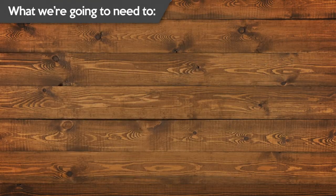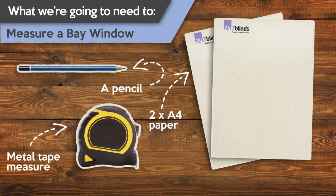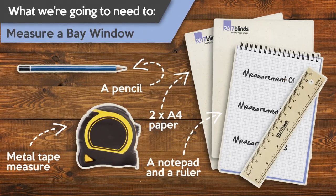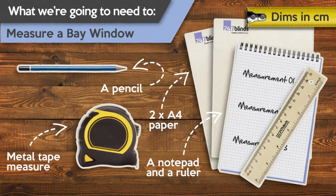To measure for your blinds you're going to need a metal tape measure, a pencil, a couple of sheets of A4 or A5 paper, and a notepad and ruler. And throughout this video we'll be referring to all measurements in centimeters.